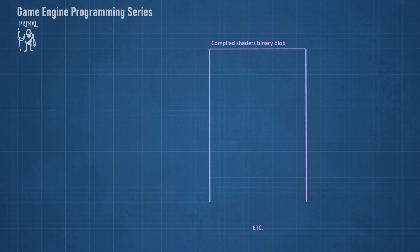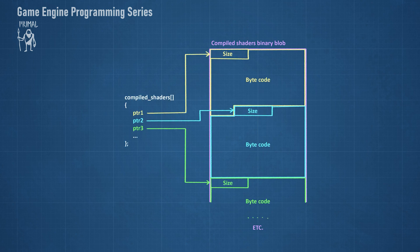The way compiled shaders sit in that block is pretty simple. It starts with a 64-bit unsigned integer that contains the size of each shader's bytecode, followed by the bytecode. This is repeated for each shader in the blob of memory.